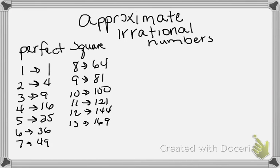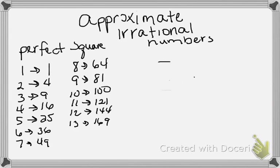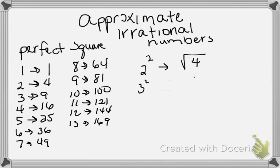A perfect square — think of an actual square where both sides are the exact same length, since all sides of a square are equal. So a perfect square would be like 2×2, with an area of 4, or 3×3, with an area of 9. If we were doing 2² or 3², the opposite operation is the square root. Squaring and taking a square root are opposites, just like adding/subtracting or multiplying/dividing are opposites.